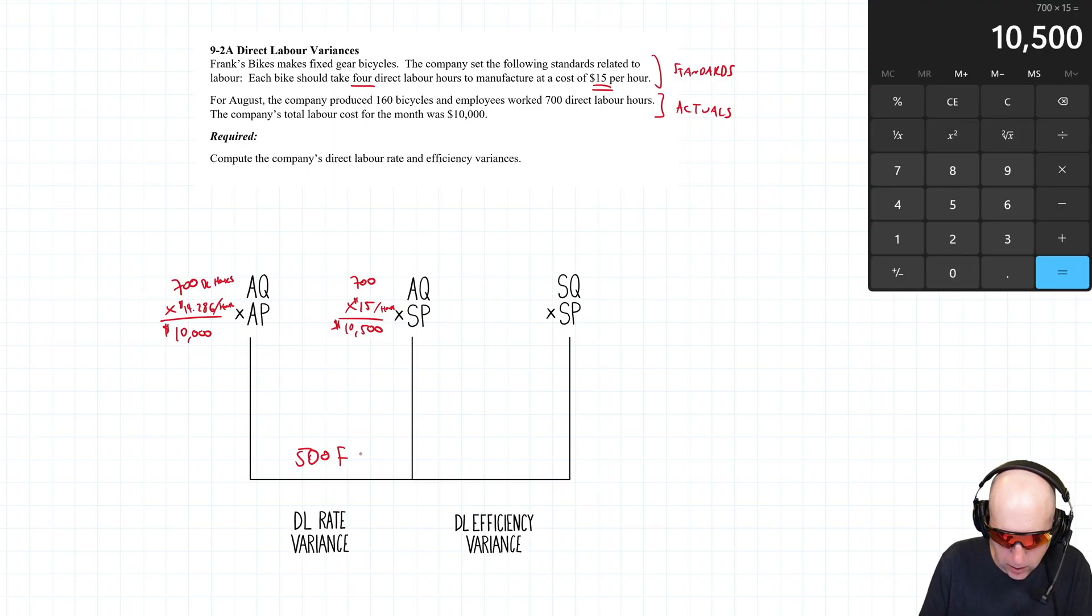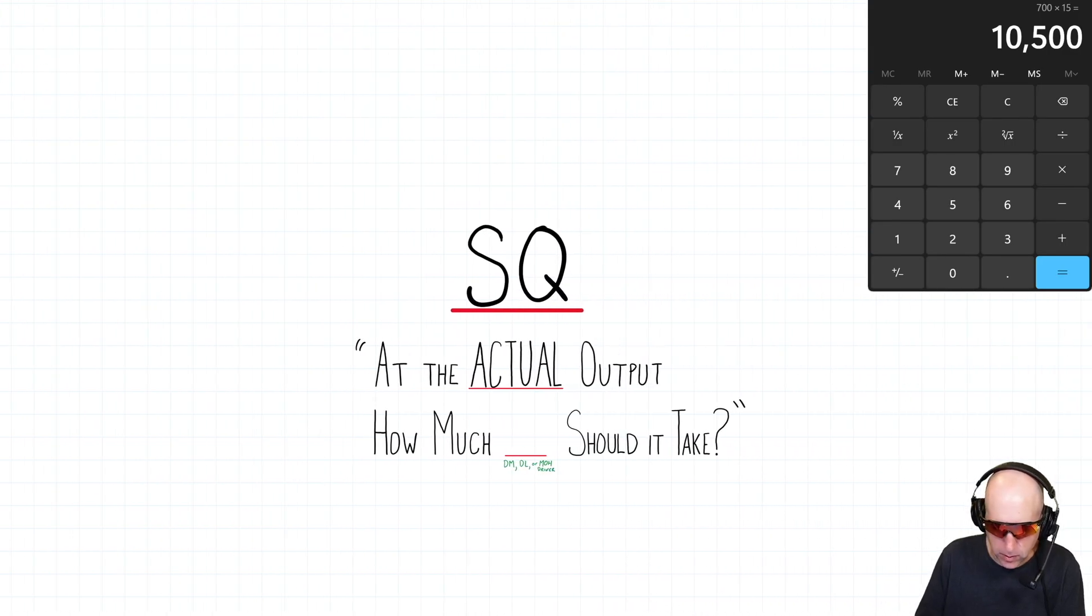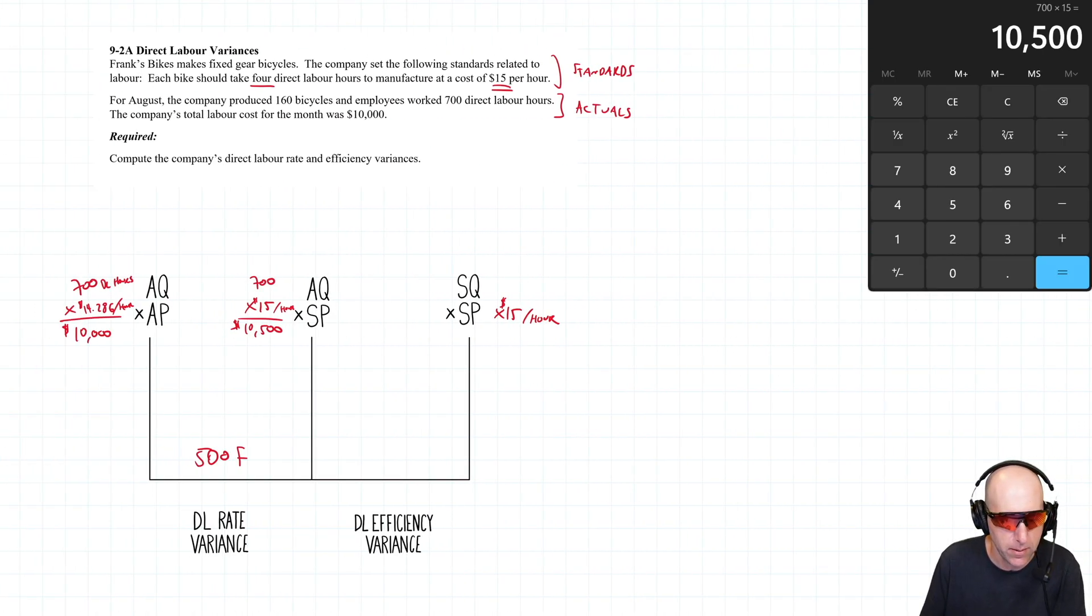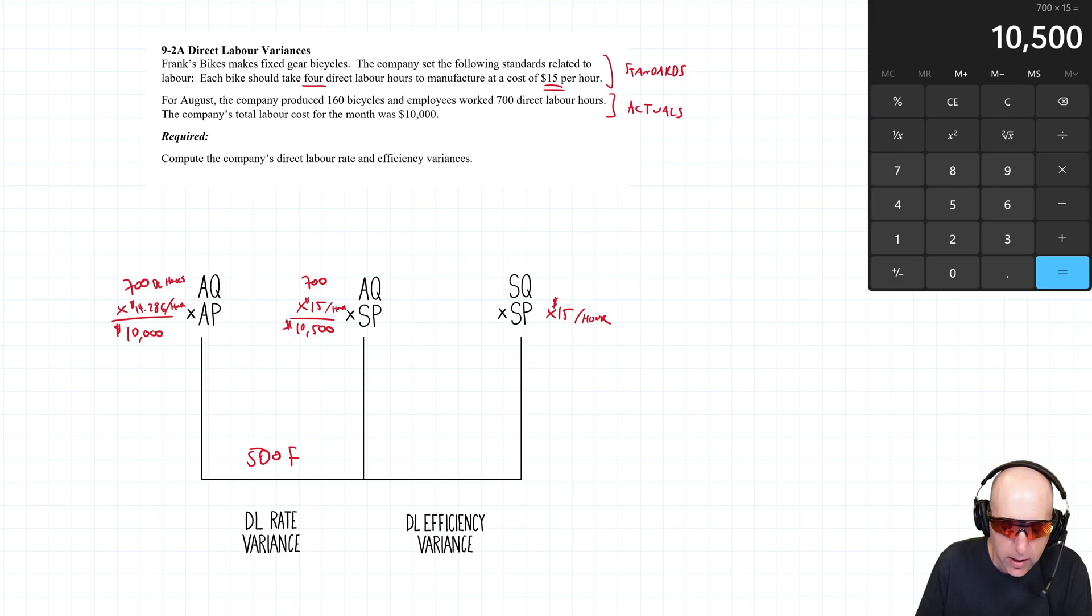SQ×SP: SP is $15 an hour—that's our standard wage rate for our direct labor workforce. SQ answers the question: given the actual level of output, how much labor should it take? How many labor hours should it take? Look at whatever the company makes, whatever the output was. The company made 160 bicycles in the month.